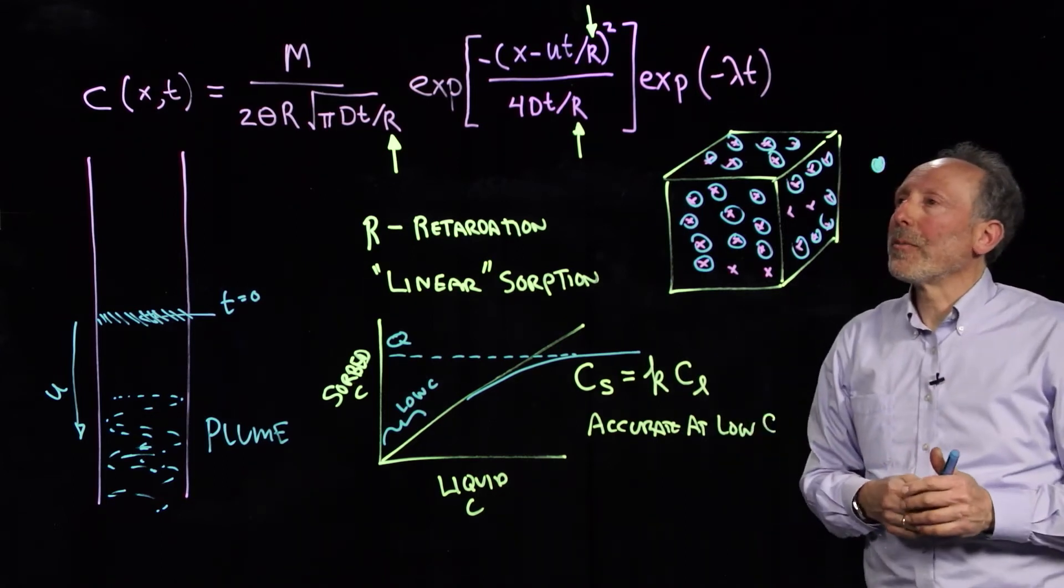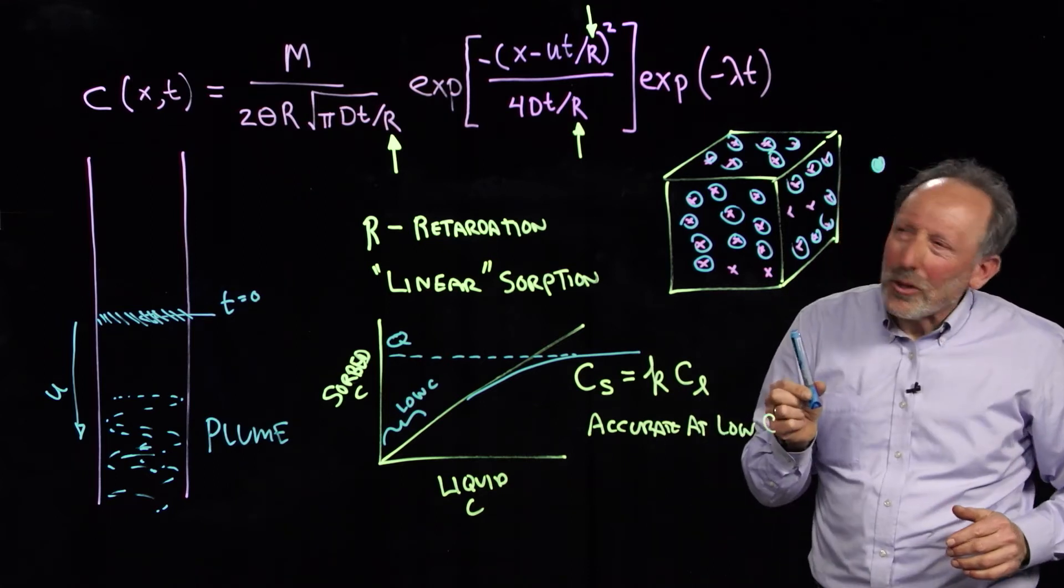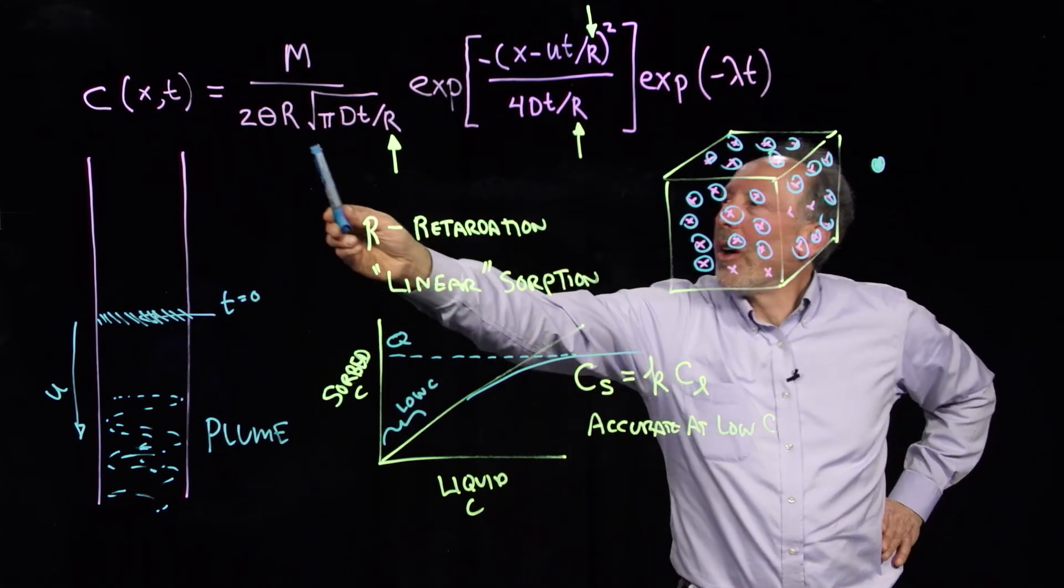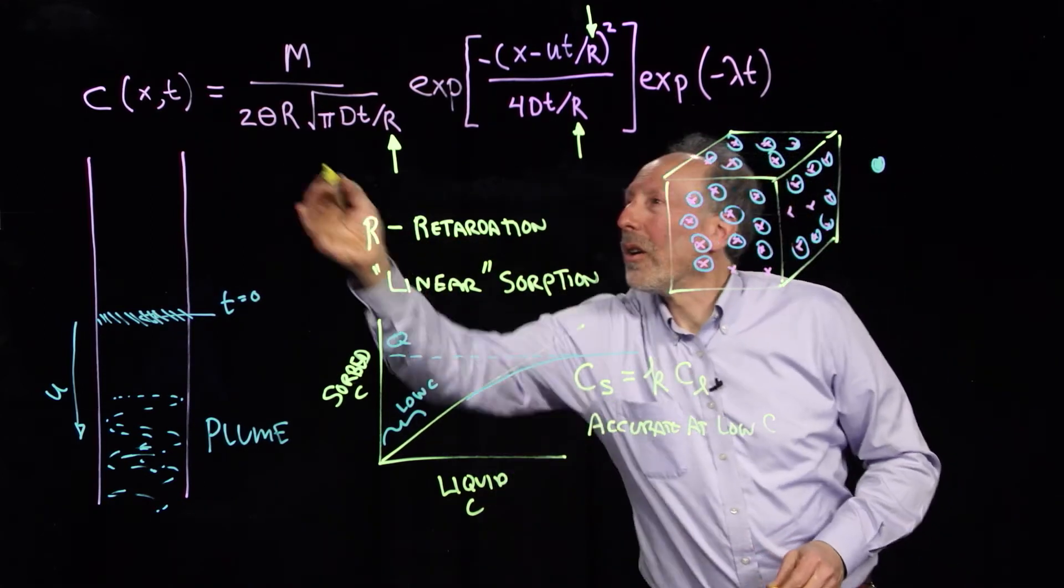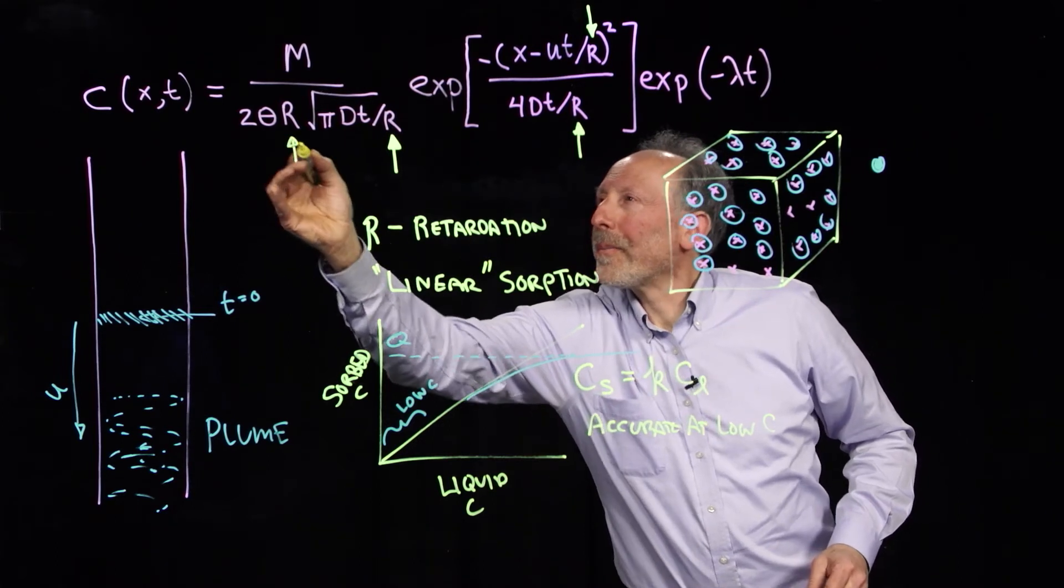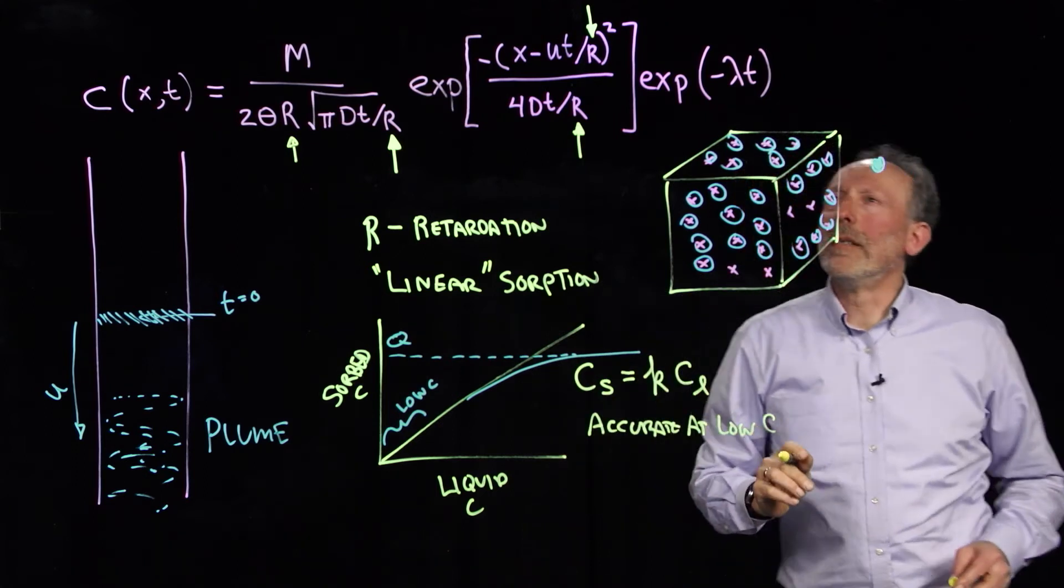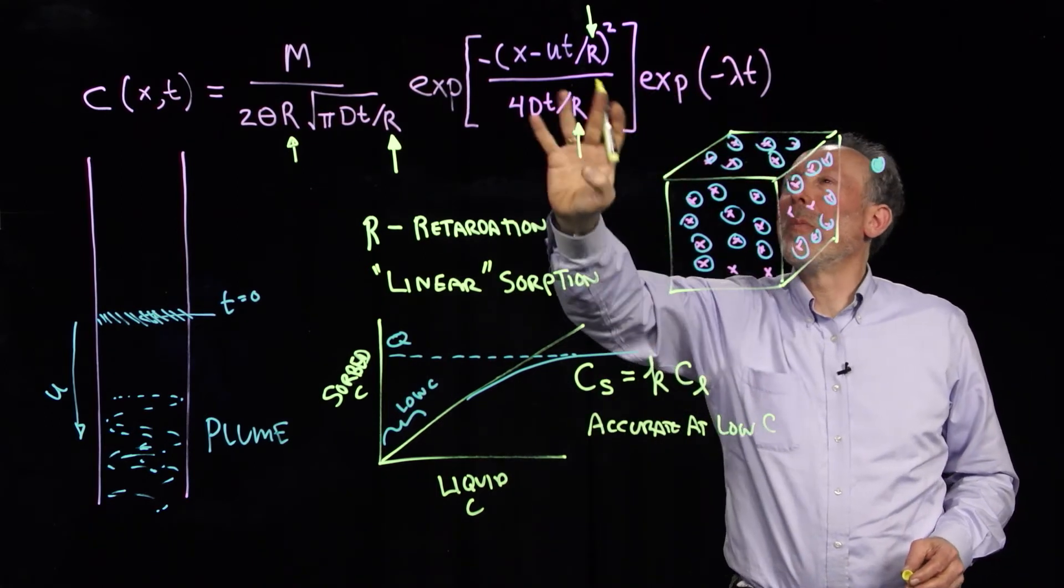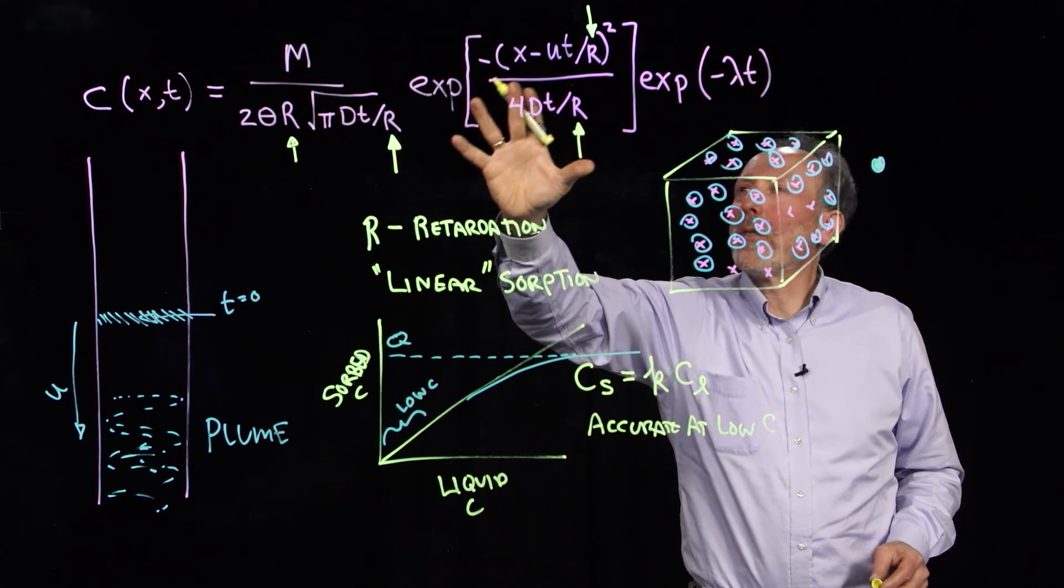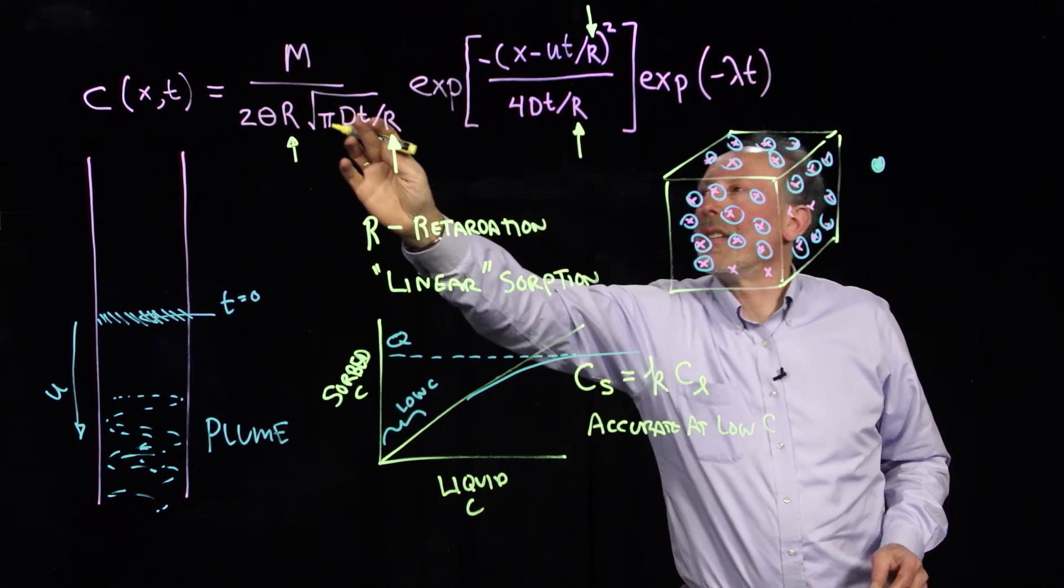Supposing we do have linear sorption, what we see, which is really, really cool, is that the R universally is found with a T. Again, setting aside degradation for the moment, but in this part of the equation, it's always T over R, T over R, T over R.